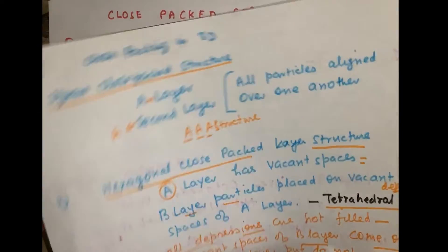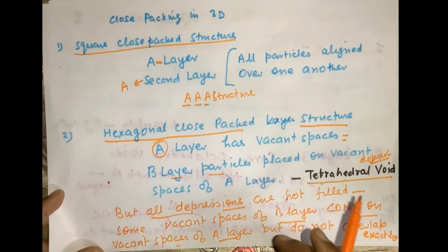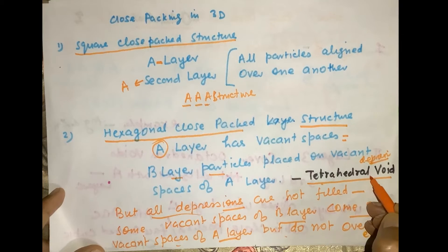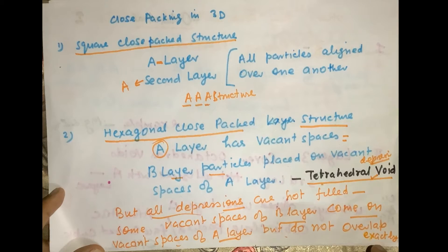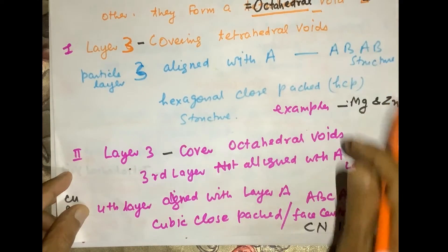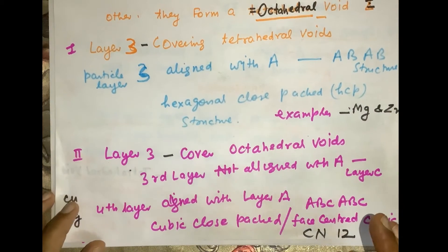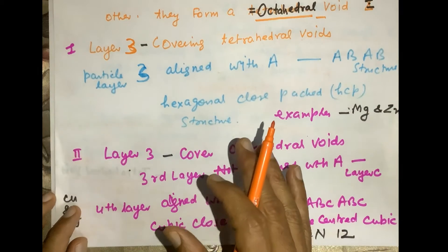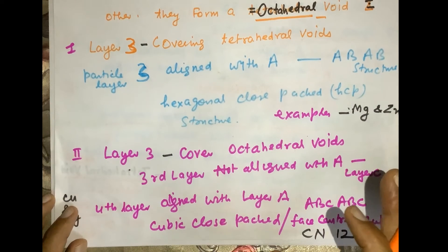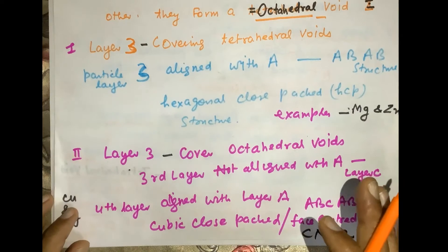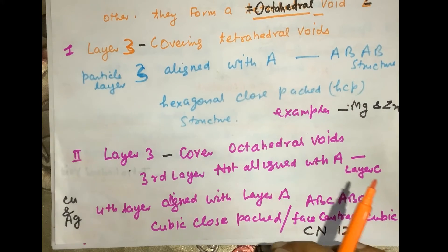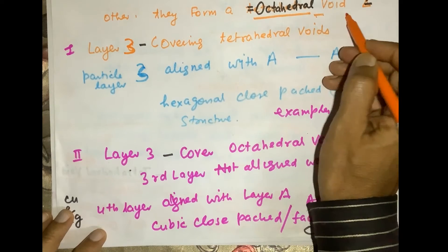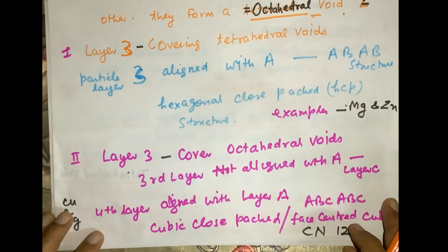That void is called an octahedral void. So when placing layers, two types of voids are created: a tetrahedral void when the particles of layer B are placed on the vacant spaces of layer A, and an octahedral void when the empty space of layer B is on the empty space of layer A — they do not overlap exactly but create an octahedral void.